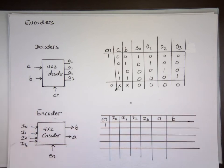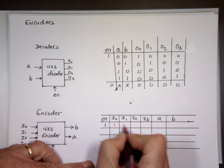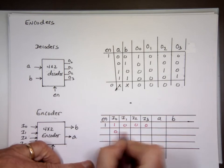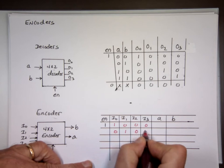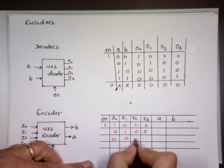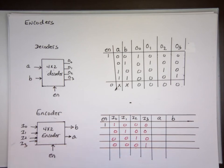The way the encoder works, only one of these inputs can be on at any given time. So input combinations are: 1,0,0,0 — then 0,1,0,0 — then 0,0,1,0 — and 0,0,0,1. So it's the reverse of the decoder.